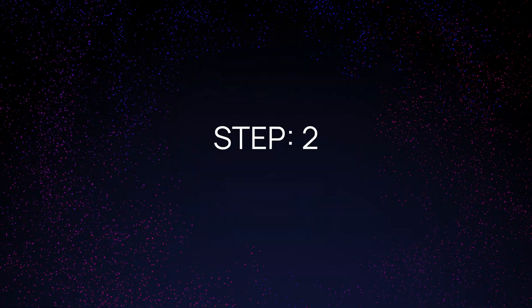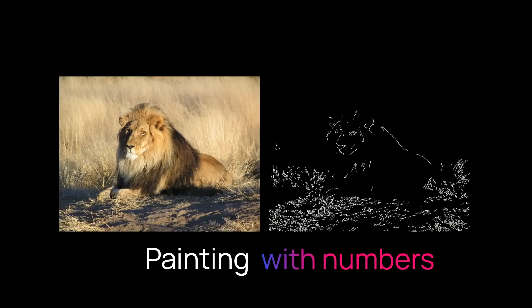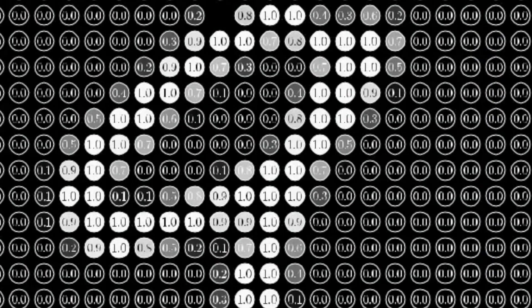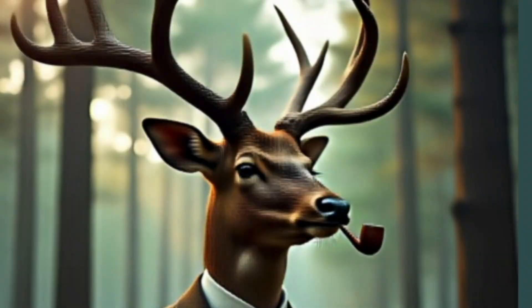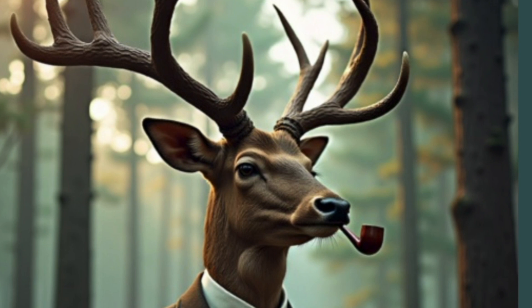Step 2: Painting with numbers. Next, Stable Diffusion starts with a blank canvas of random dots, kind of like TV static. Then it uses your word code to guide it as it slowly transforms these dots into a picture.